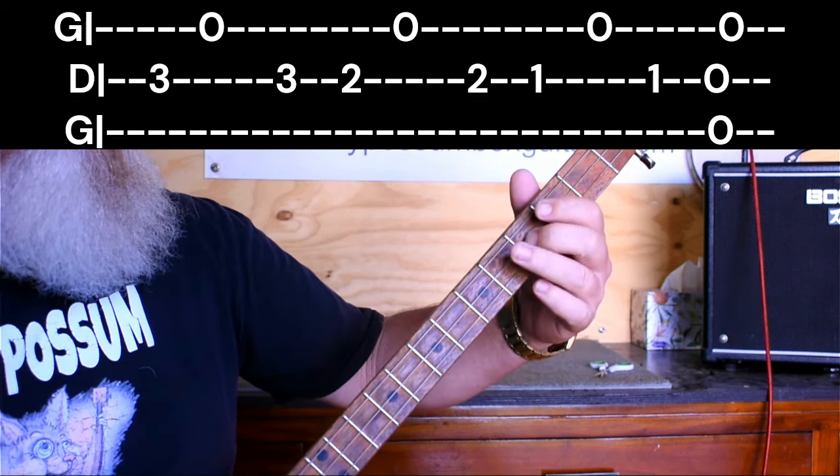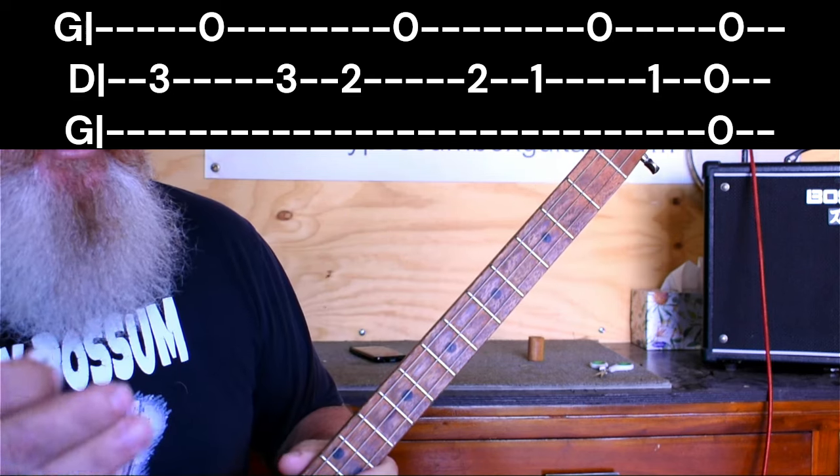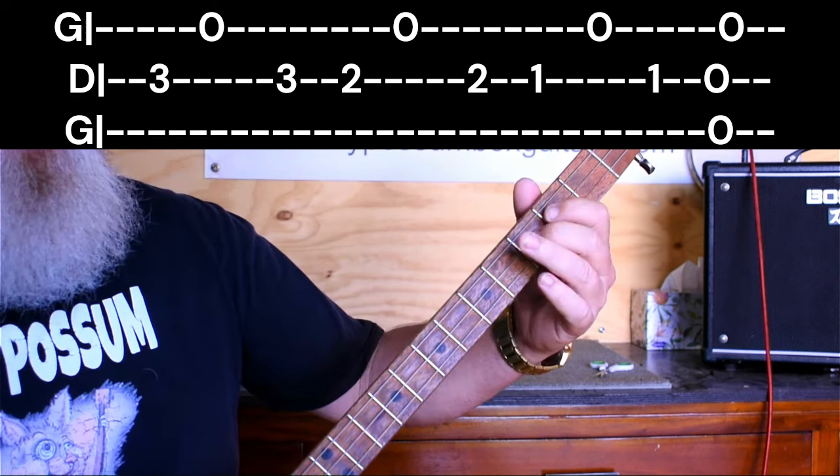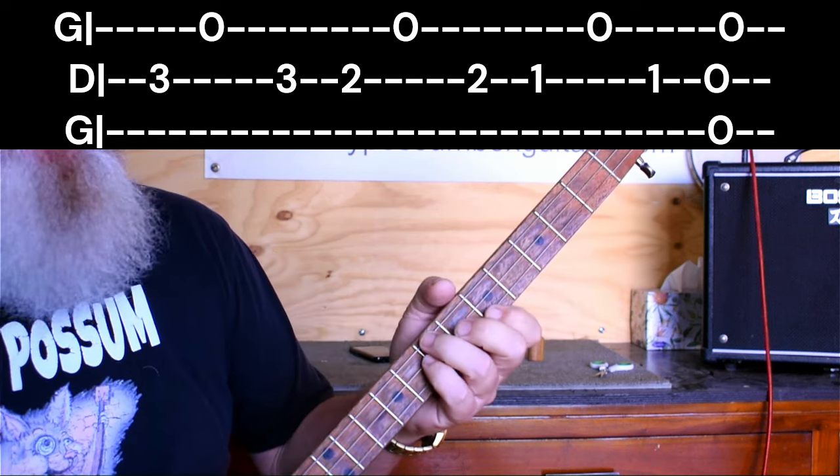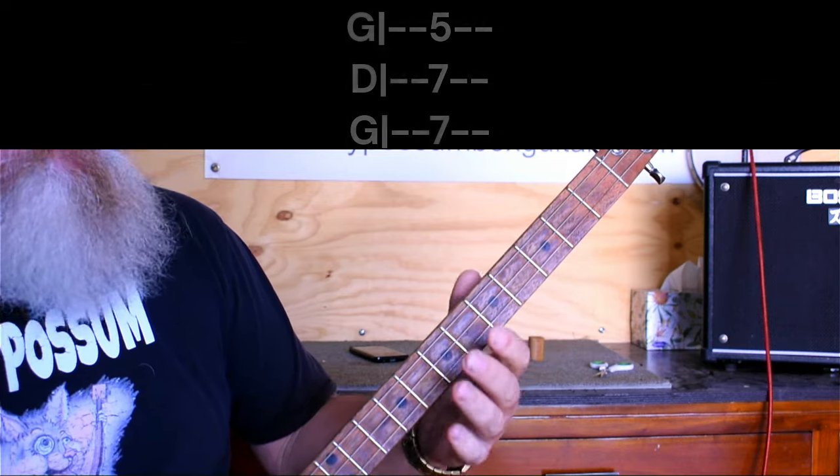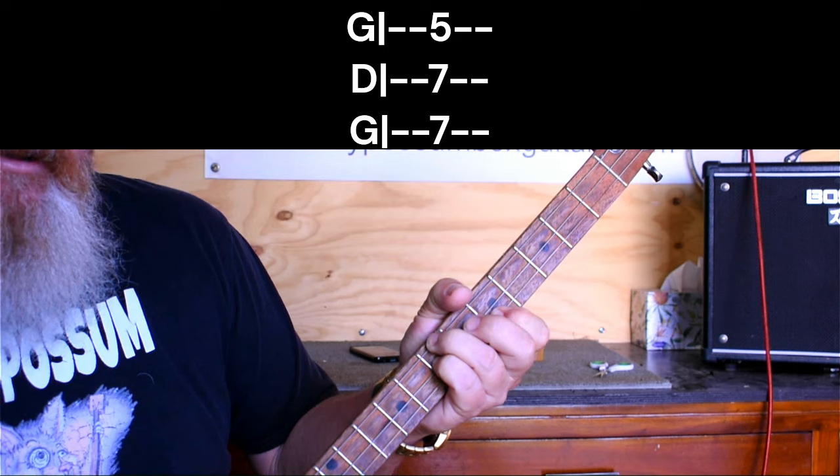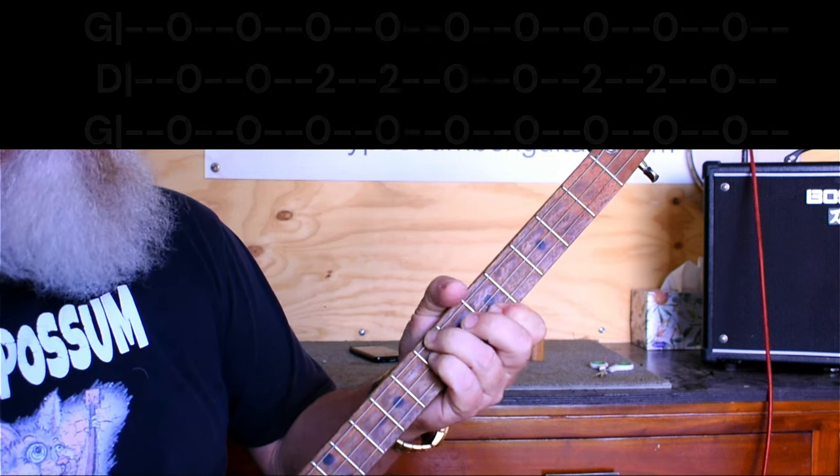And then you hit an open G. So let's just do that again. It's got that little bit of a pattern to it, but that's how it goes. And then we come up here and hit a D seventh, which is seven, seven, five. And then we're back to a 12 bar.